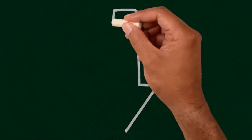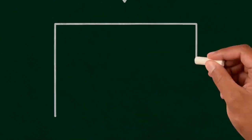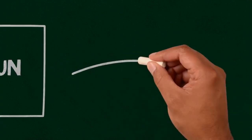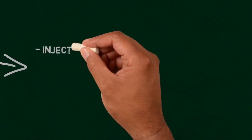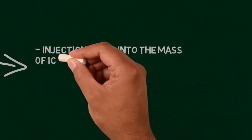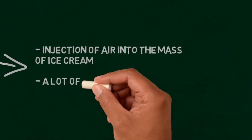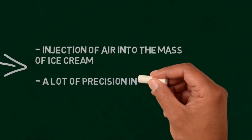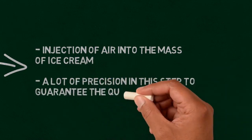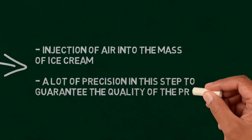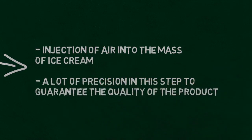After that, we have the process of overrun, which is basically the injection of air into the mass of the ice cream to make it more viscous. It's worth mentioning that excess air can lead to the ice cream looking like foam, while a lack of it leaves the mass heavy on the palate. Because of this, the process requires a lot of precision to guarantee the quality of the product.